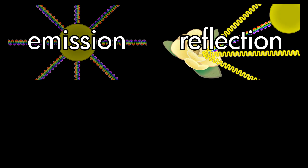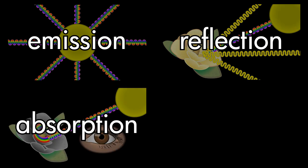Emission occurs when light is radiated from an object. Reflection occurs when light encounters an object and changes direction. Absorption occurs when light is retained within an object. Transmission occurs when light passes through an object.